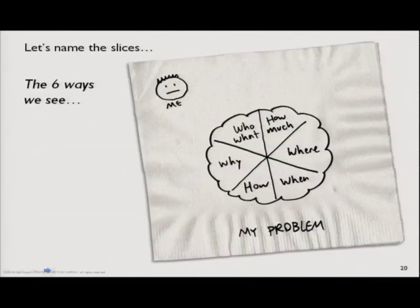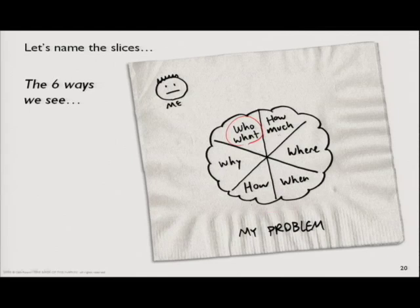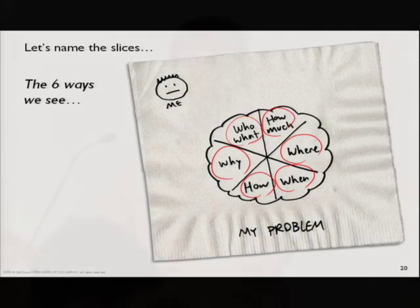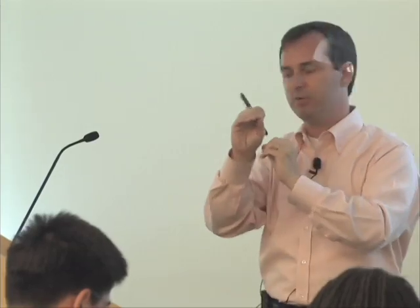Here's where it all comes together: if we can break the problem down into those six different pieces — and I'd like you to go ahead and write these on your napkin — I've clumped them as follows. One slice is the 'who and what.' One slice is 'how much.' One slice is 'where.' One is 'when.' One is 'how.' And the last one is 'why.' Anybody who's been through fifth-grade English class remembers the five W's — who, what, where, when, why — that we were all taught when writing our five-paragraph expository essay.